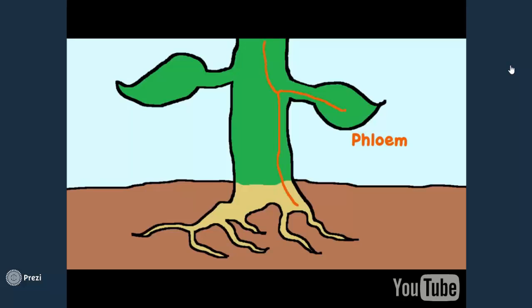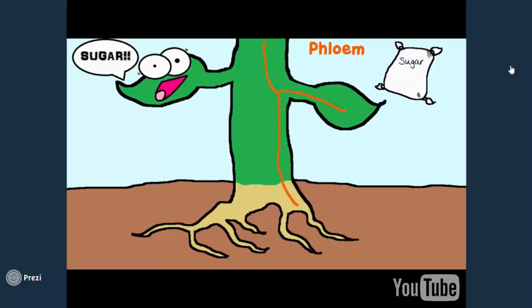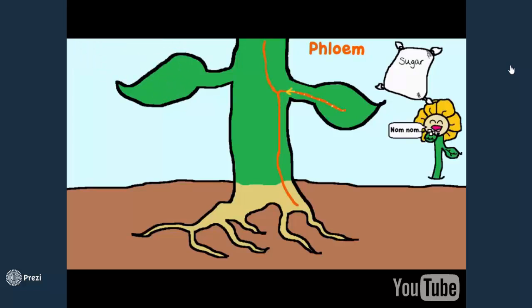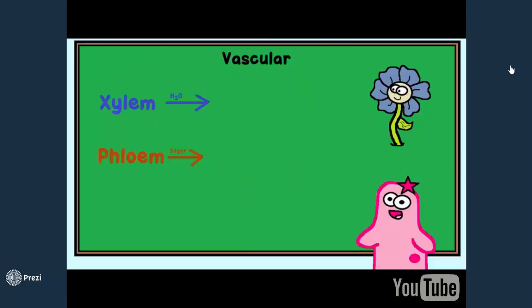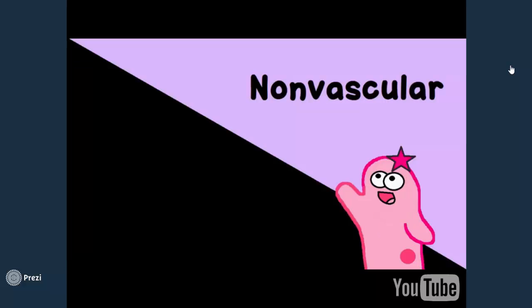The phloem carries sugars, which are typically produced in the leaves during photosynthesis. This sugar is the food source that plants make through photosynthesis, and it needs to be carried throughout the plant. The phloem might start with a P, but it has that same F sound that 'food' has, so that helps remember that it carries the plant's food.